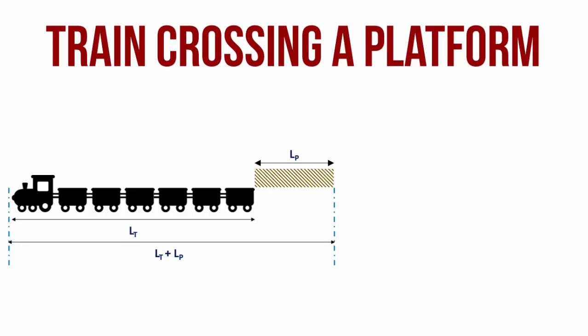Now you understand why trains change the way you calculate a time and distance problem. For an ordinary person walking from one end of the platform to the other, or maybe a car or a bicycle, the distance travelled will still be just LP. However, since a train is so long, for a train of length LT to cross a platform LP, the total distance travelled also goes up by the length of the train itself.